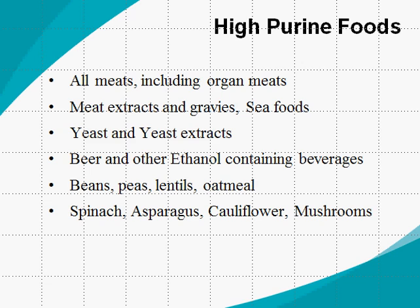The acute attack subsides in a week or two with treatment. To prevent further attacks, dietary modification is essential. High-purine foods to reduce include all meats and organ meats such as liver, meat extracts and gravies, all seafoods, yeast and yeast-containing foods, beer and other ethanol-containing beverages.